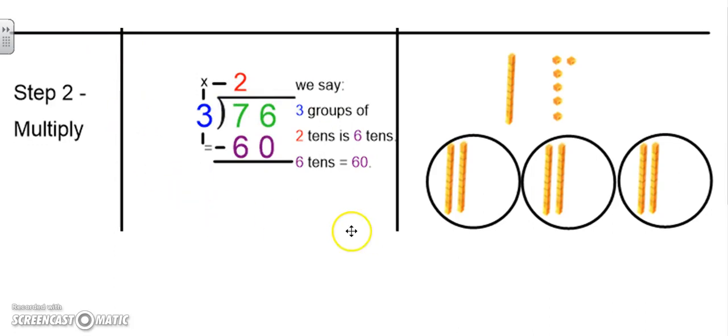My next step is to multiply. So 3 groups of 10 is 6 tens, or 60. Because I started with 7 tens, but I was able to divide 60 of them, I subtract it out.